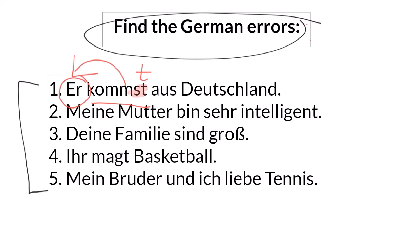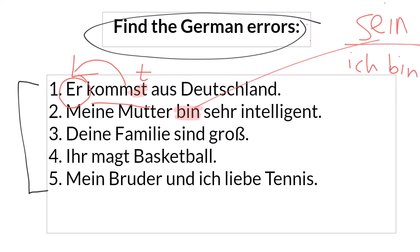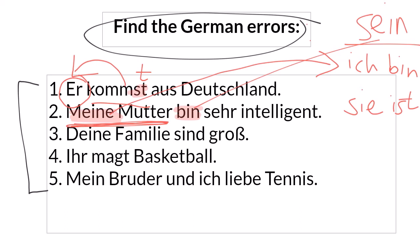In the second sentence, we have a wrong verb ending — it's actually a completely wrong verb, because with 'sein' all of the endings are complete words since it's so irregular. We have 'ich bin', but I think I know why some people make this mistake: they look at 'meine' and think it refers to me, so it goes with 'ich'. But the person in charge of the verb is not 'meine' — it's 'meine Mutter', which could be replaced with 'sie'. The ending for 'sie' is 'ist': Meine Mutter ist sehr intelligent.